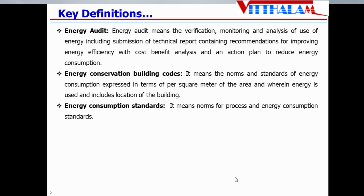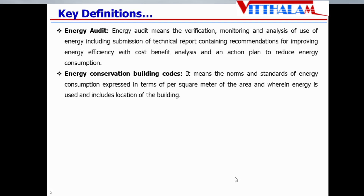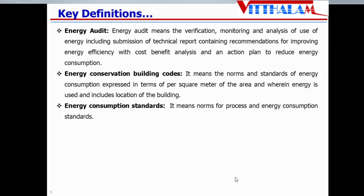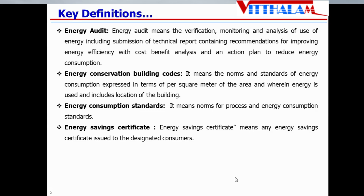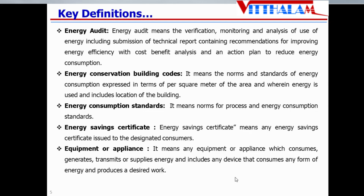EPI and AAHEPI will be found out, and based on that, the rating of that building — that is star one, star two, star three, four, five — will be given. Energy consumption standards means norms for process and energy consumption standards. Energy savings certificate is the certificate issued to the designated consumers if they achieve or surpass the target given in that scheme. Equipment or appliance means any equipment or appliance which consumes, generates, transmits, or supplies any energy — that includes any device that consumes any form of energy and produces a desired work.